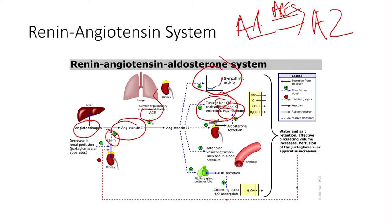Where sodium goes, fluid goes — so we're going to hold on to more volume. We'll also see vasoconstriction, as angiotensin 2 is a potent vasoconstrictor. We'll see higher ADH secretion, which as we just discussed will help retain more water, and then higher aldosterone secretion, which will also affect fluid retention. That is basically how the RAS system operates.